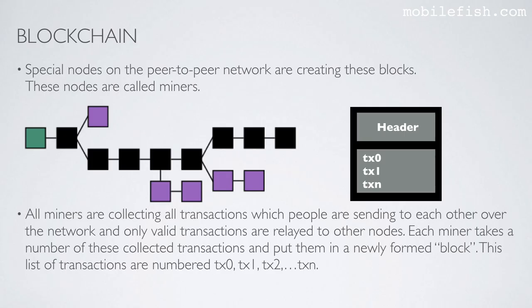Special nodes on the peer-to-peer network are creating these blocks. These nodes are called miners. All miners are collecting all transactions which people are sending to each other over the network, and only valid transactions are relayed to other nodes. Each miner takes a number of these collected transactions and puts them in a newly formed block. This list of transactions is numbered transaction 0, transaction 1, transaction 2, etc.